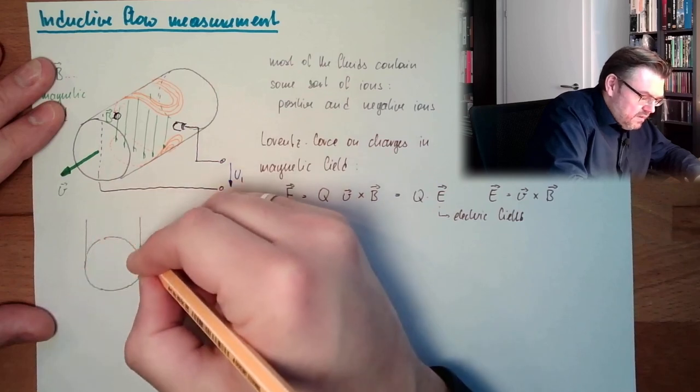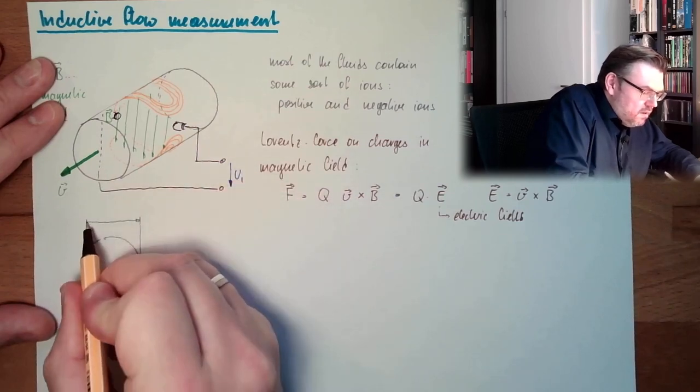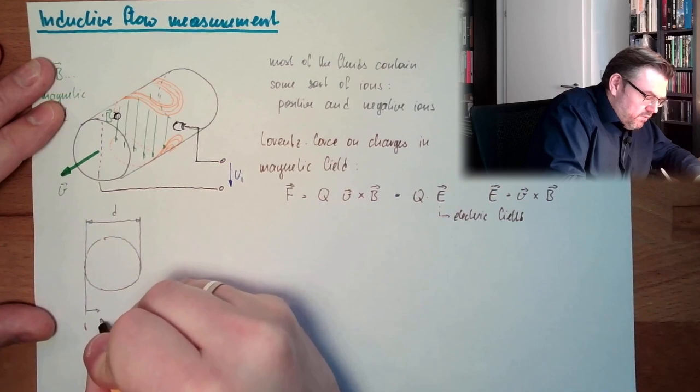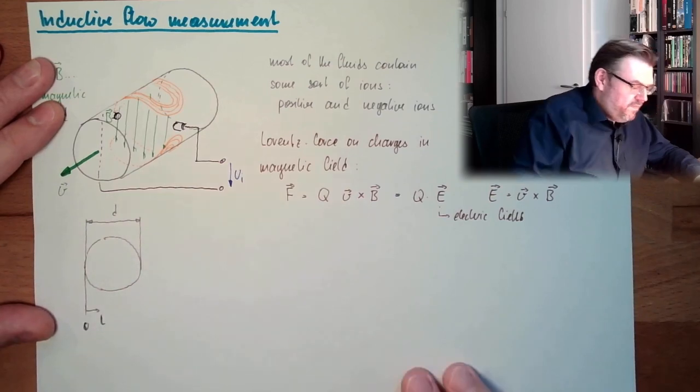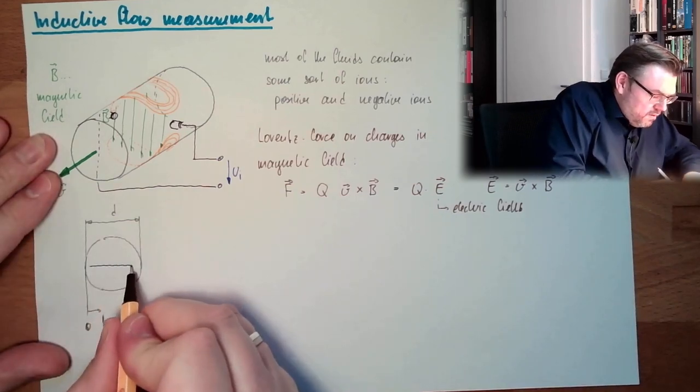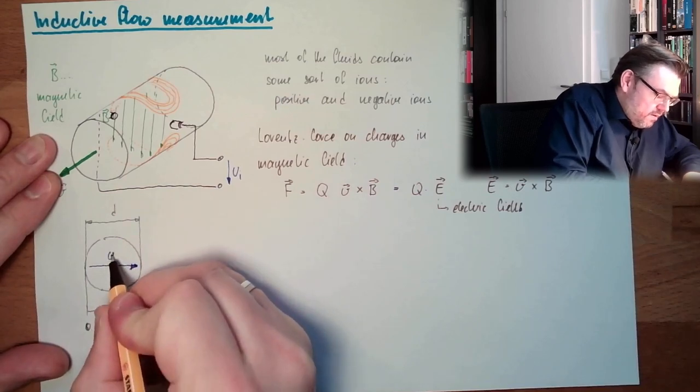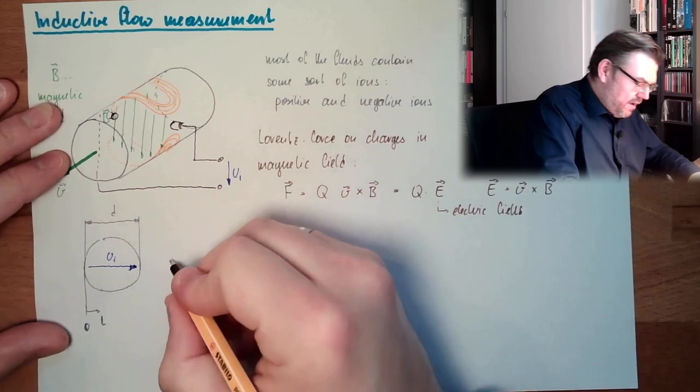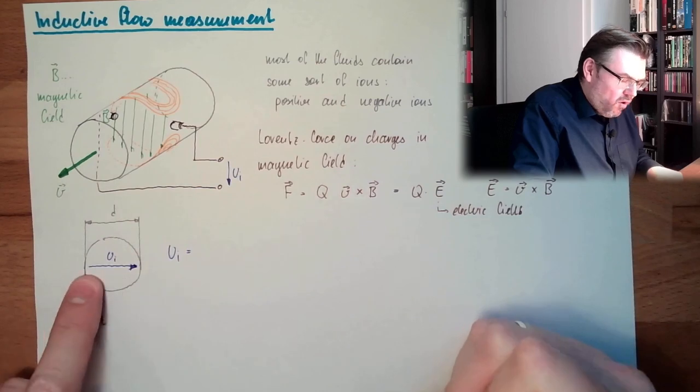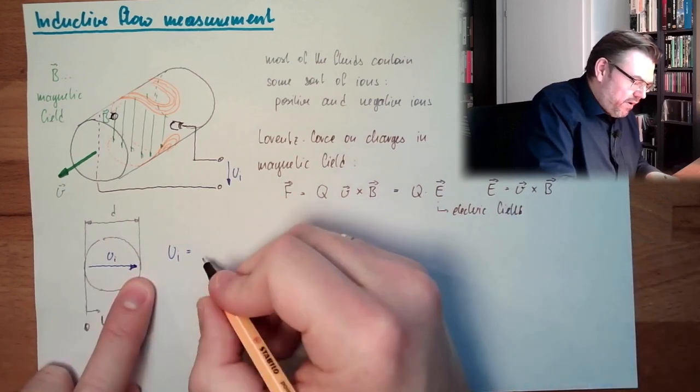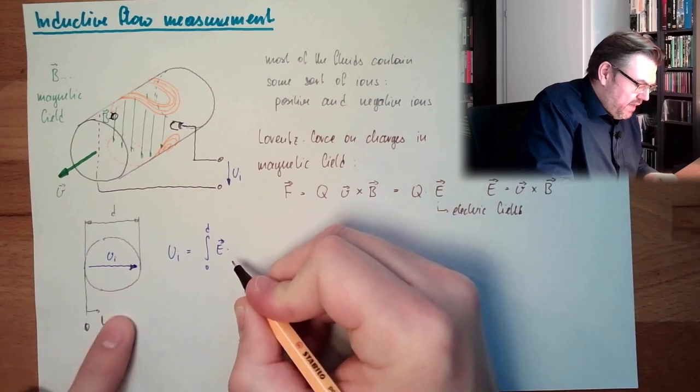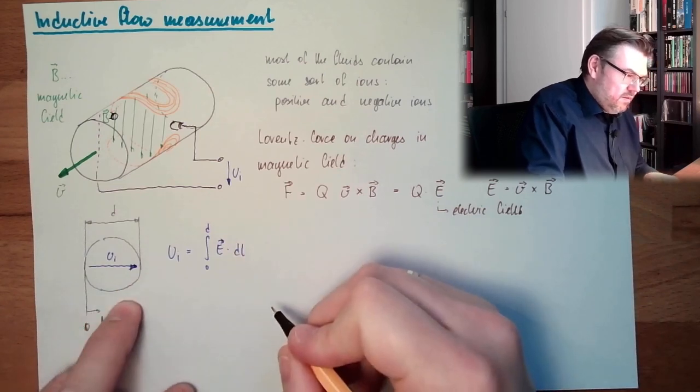It has a certain inner diameter d. And here we have zero, and we are going to travel with l. And here we have this, here in between we have UI. And this UI is the whole electric field summarized. So, summarized from zero to d, electric field multiplied by the length.